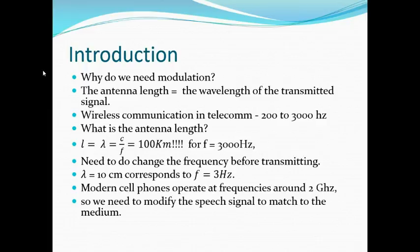Whenever we talk about wireless communication and wireless transmission, the first question that comes to mind is: why do we need to do modulation before transmitting the signal? The main reason is that for proper and efficient transmission, we need the antenna length equal to the wavelength of the transmitted signal. Wireless communication in telecom has frequencies in the range of 200 to 3000 Hz, so doing a simple calculation — lambda equals C divided by F — we get that the antenna length should be 100 kilometers for a frequency of 3000 Hz, which is unrealistic to design.